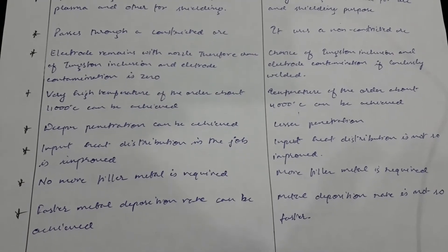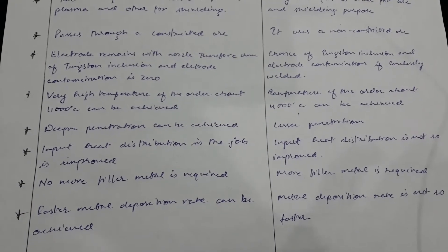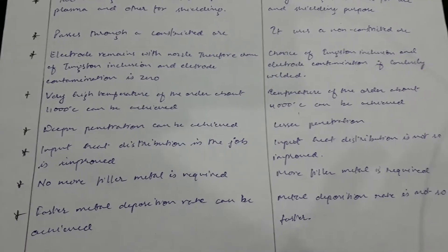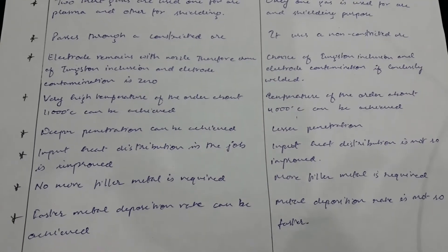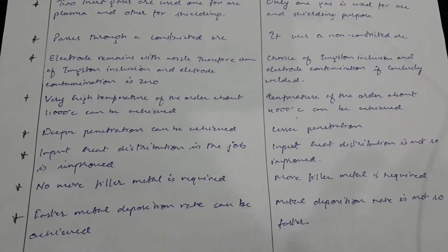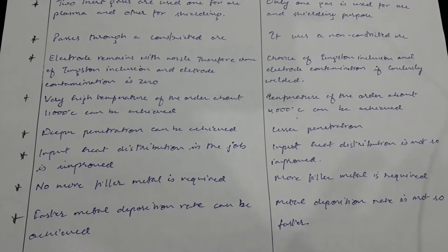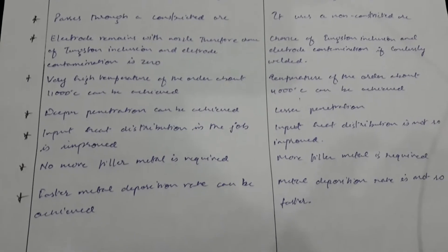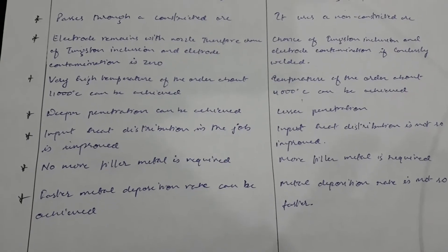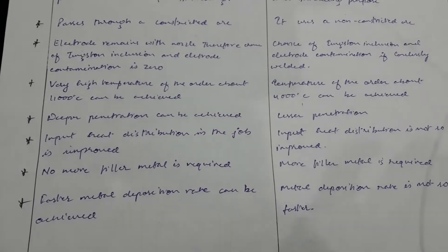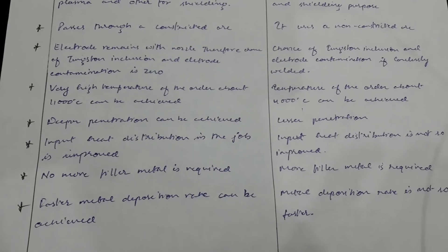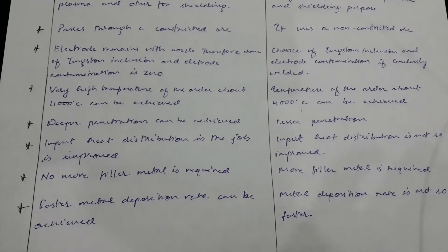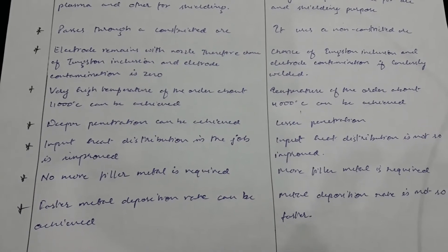The fourth point is that a very high temperature on the order of about 11,000 degrees centigrade can be achieved in plasma arc welding, whereas in TIG welding the temperature achieved is about 4,000 degrees centigrade. In plasma arc welding there is deeper penetration, and in TIG there is lesser penetration.